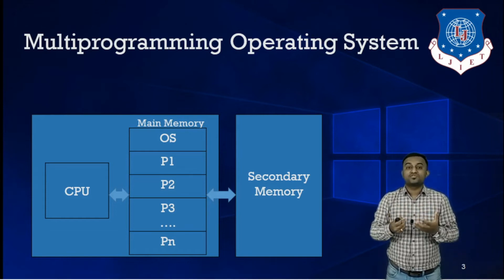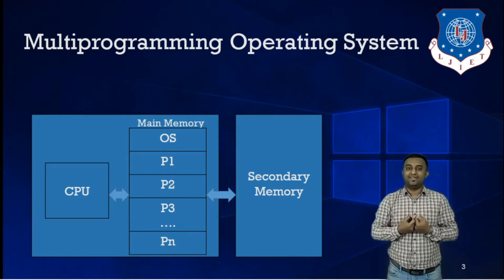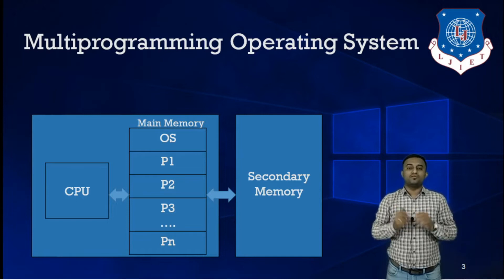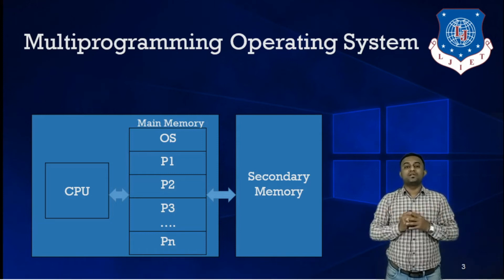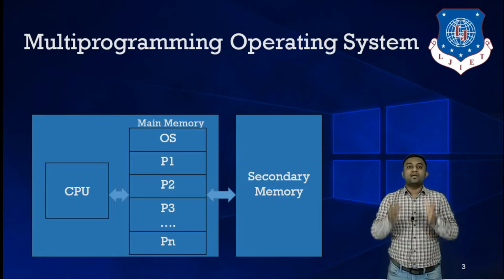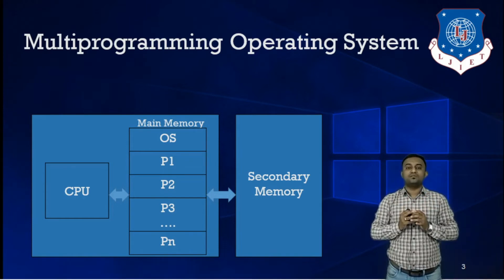Multiprogramming means more than one program is loaded into main memory. So that all programs can be executed at any moment of time whenever the CPU is free — that concept is multiprogramming. If you are using your mobile phone or laptop and you open more than two or three applications simultaneously, that is multiprogramming. But multiprogramming and multiprocessing are two different terms. Multiprogramming deals with a single processor machine where only one program can be executed at a time.